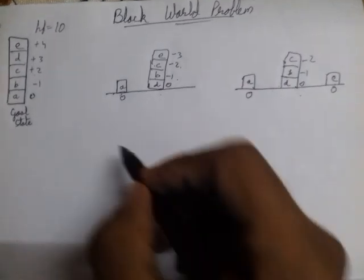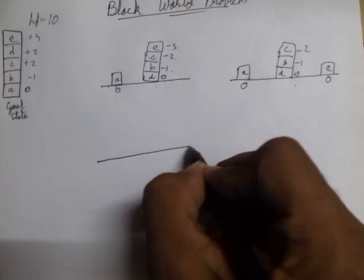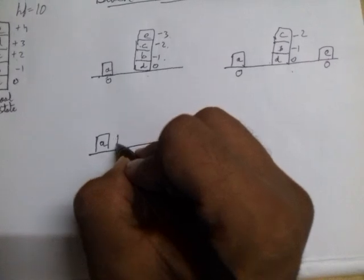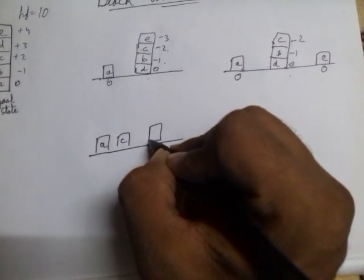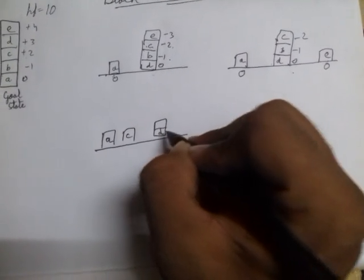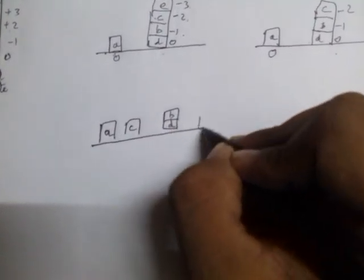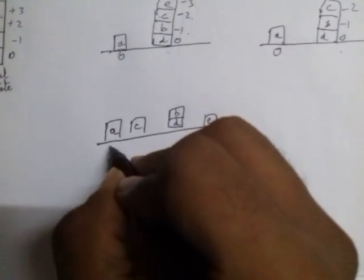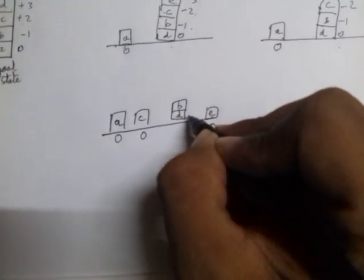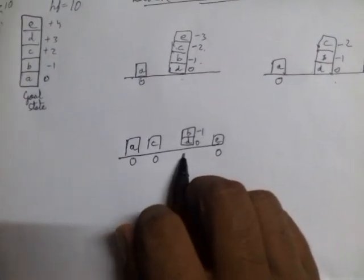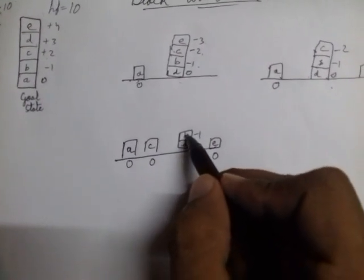The next step is to remove block C from the stack and place it on the ground. The remaining blocks are D and B, with E also on the ground. A is 0, C is 0, E is 0, D is 0, and B is -1, so the total hf value is now -1.